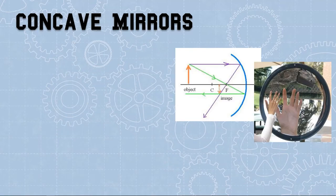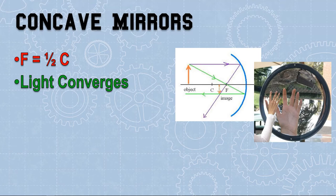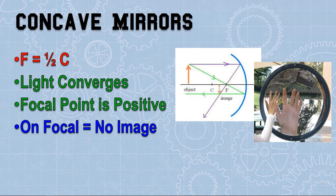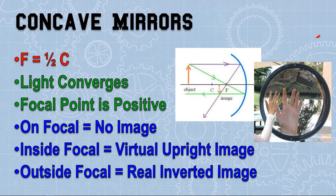Now that we've explored concave mirrors, let's understand the big ideas. The focal point is always equal to half of the center of curvature. Due to the shape of the concave mirror, light converges at the focal point. The focal point is in front of the reflective surface, so the focal point is positive for concave mirrors. A concave mirror gives you three options depending on where you place the object: if on the focal point, no image; if inside the focal point, a virtual upright image behind the mirror; if outside the focal point, a real inverted projectable image in front of the mirror.